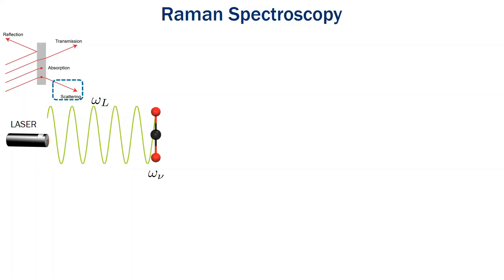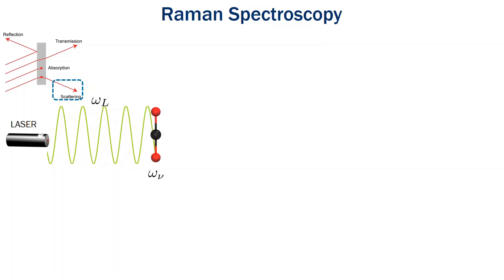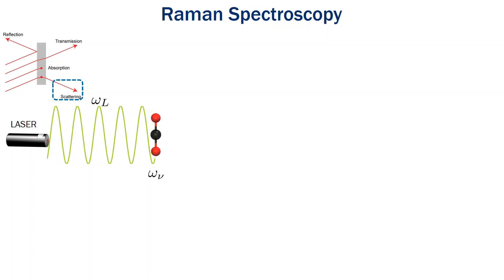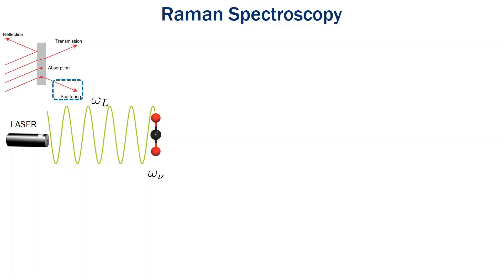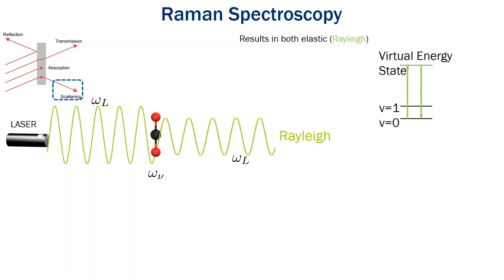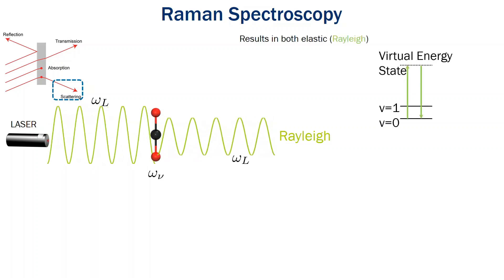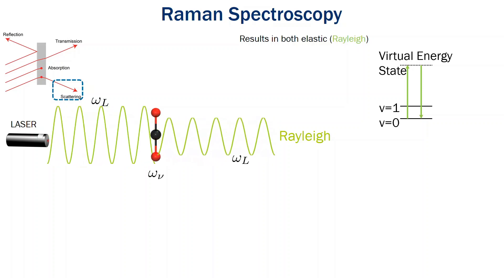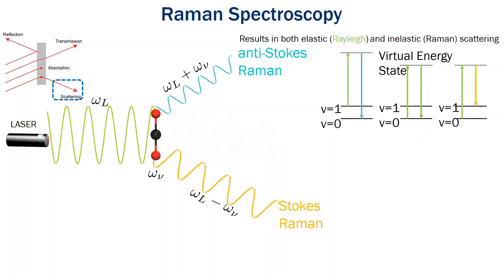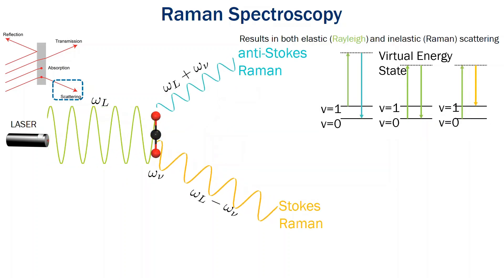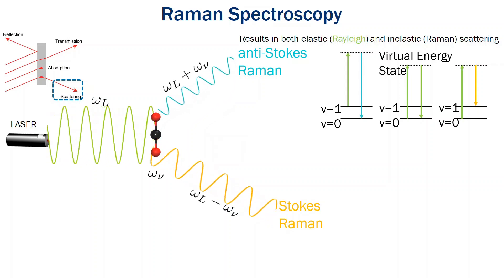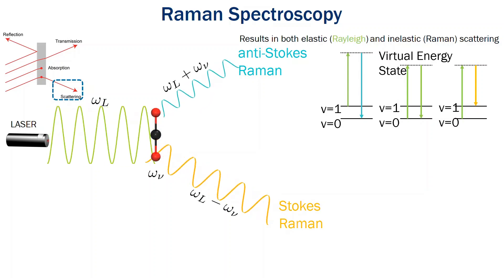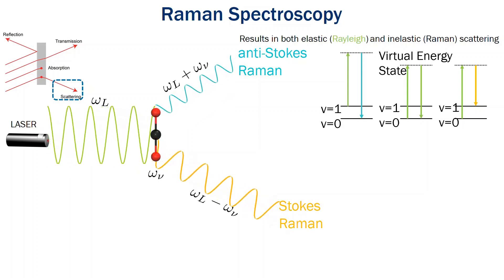Raman spectroscopy is a vibrational spectroscopy technique in which we are measuring scattered light off of your molecule or crystal. There are two forms of scattered light: elastic scattered light, in which there's no net change in the photon in and the photon out, and inelastic scattering, in which there is a net change between the photon in and the scattered photon out. Raman is a form of this inelastic scattering.